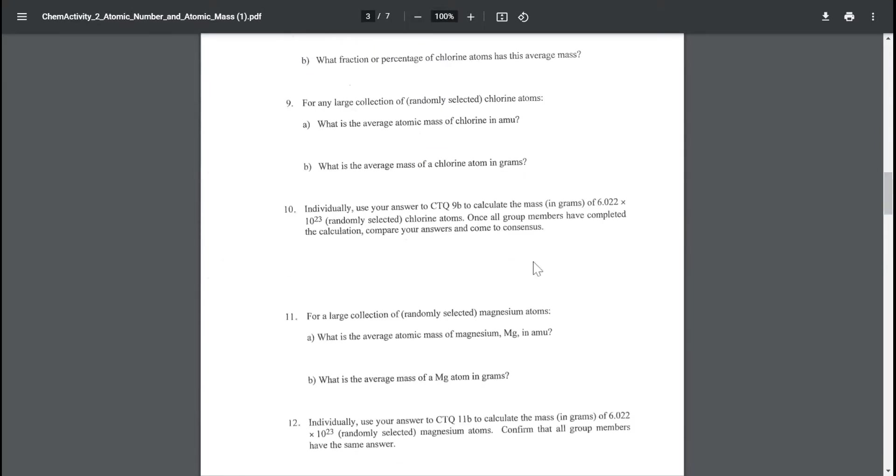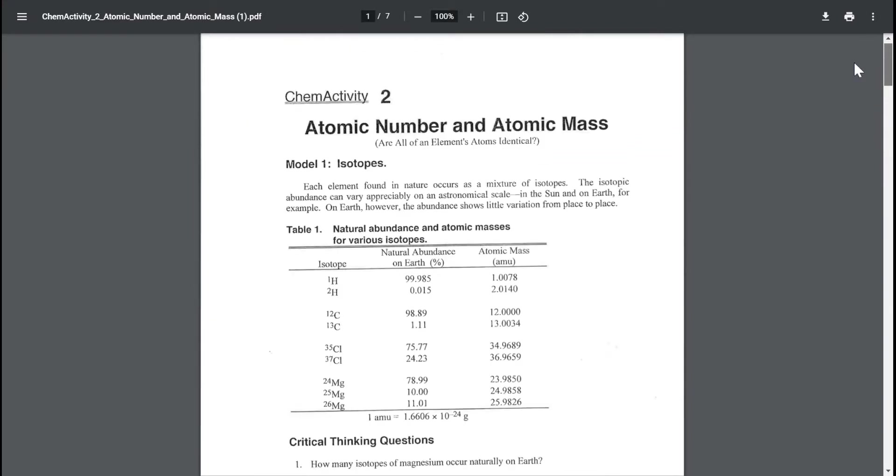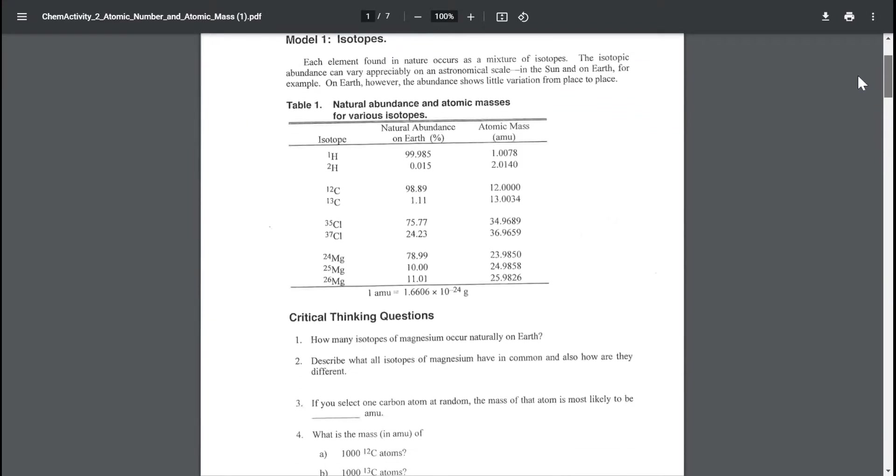Same thing. What is the average mass of a chlorine atom? You can find that in grams by using this conversion: 1 AMU equals 1.66 times 10 to the negative 24 grams. So you need to use that.